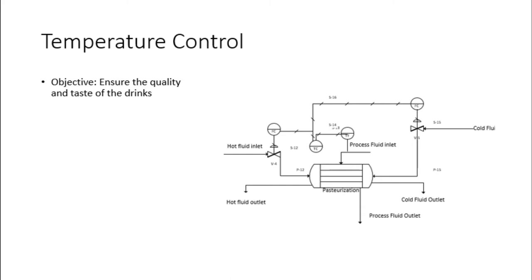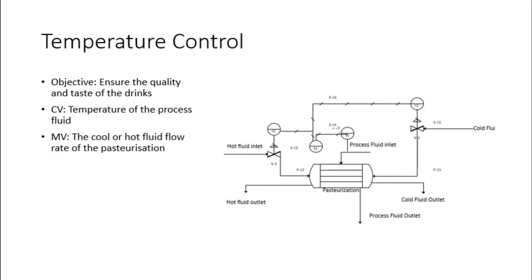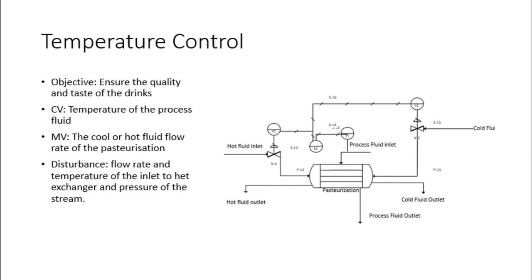Next, we will talk about the temperature control in the pasteurization. The objective of this temperature control is to ensure the quality and taste of the drink. This is because some ingredients may only dissolve at a specific temperature, and too high a temperature in the solution will cause the CO2 content to decrease. To control the temperature, a feedback system is used. The transmitter will detect the minimum and maximum temperature of the solution at the inlet of pasteurization and send a signal to manipulate the flow rate of cold and hot fluid using a flow rate controller. The flow rate controller will control the valve for hot fluid and cold fluid. The disturbance of this control is the flow rate and temperature of the inlet stream and also the pressure.